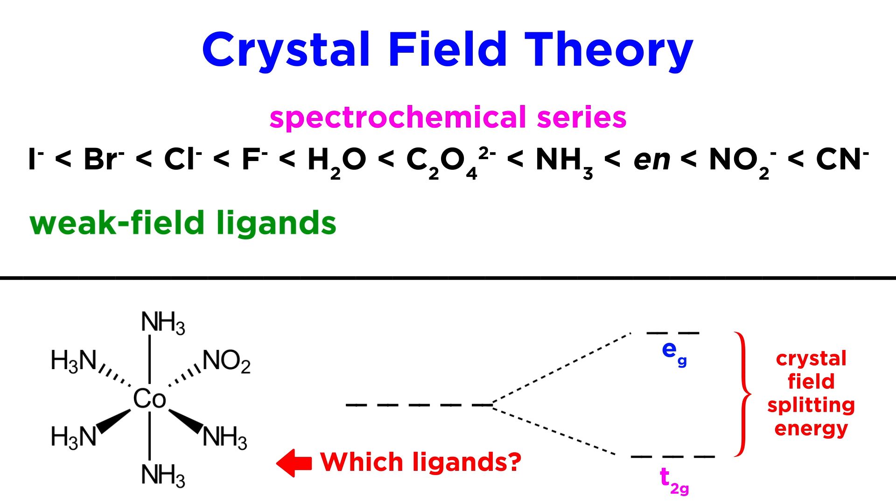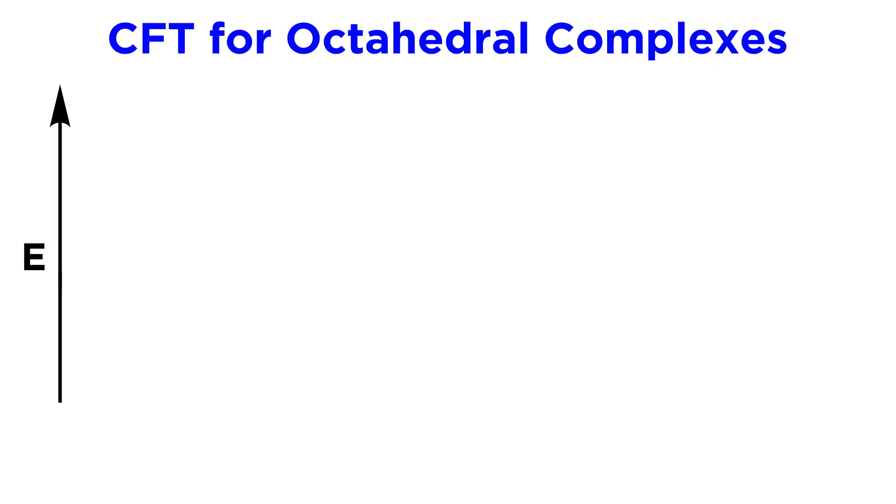On the left we have weak field ligands, and on the right, strong field ligands. Let's put this into context. For an isolated metal atom, once again, all the orbitals are of equal energy.